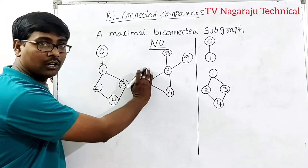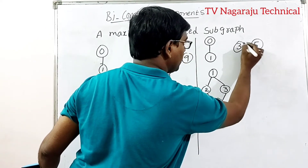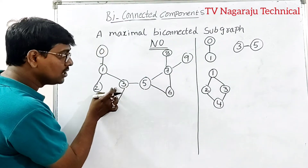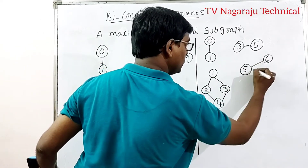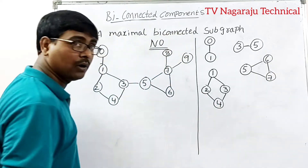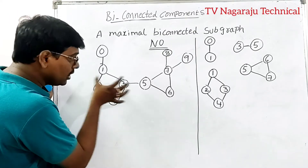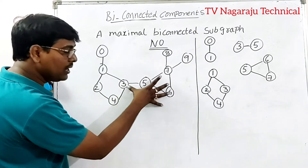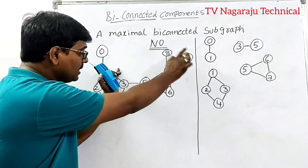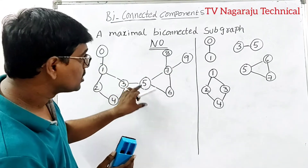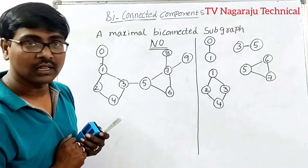From the graph we divide into two components: zero-one is one component, and the rest is another. Vertex 3 is an articulation point, and vertex 5 is also an articulation point. So three-to-five is one component. Five-six-seven is another component. Vertex 3 is included in this component, and also in the adjacent component.